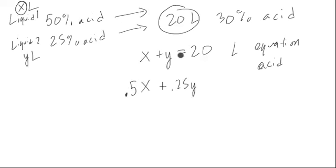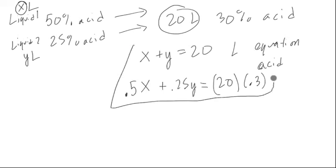Well, so the acid from these combinations will be what? How much acid in the total? Well, it looks like in the total combined liquid, we're going to have 30% of 20. So that's going to be 20 liters times 30%. So we have a system of equations with two unknowns.